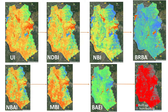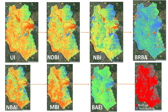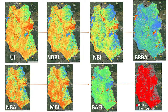Here you can see I already calculated different types of indices. First is the Urban Index (UI). Then we have the NDBI — the Normalized Difference Buildup Index. Then the NBI — the New Buildup Index. Then BRBA — the Band Ratio for Buildup Area. Also the NBAI — the Normalized Buildup Area Index. Then MBI — the Modified Buildup Index. And finally BAEI — the Buildup Area Extraction Index. Using all of these indices, I apply the Support Vector Machine algorithm to extract buildup and non-buildup regions.